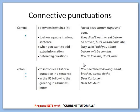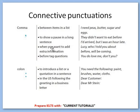Some common connective punctuation: use a comma between items in a list — for example, 'I need peas, butter, sugar and egg.' Use a comma to show parts of a long sentence — for example, 'They did not want to eat before I arrived, but I was an hour late.' Use a comma when adding extra information — for example, 'Lucy, who told you I was coming?' Also use a comma before a tag question — for example, 'You do love me, don't you?'